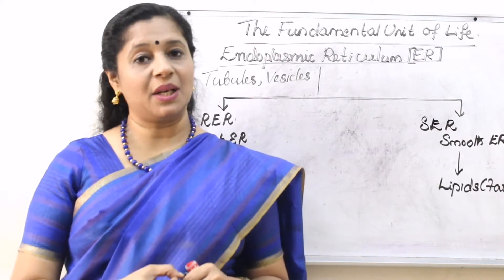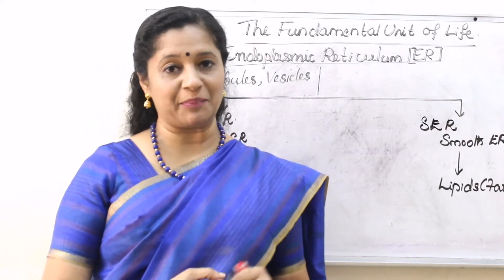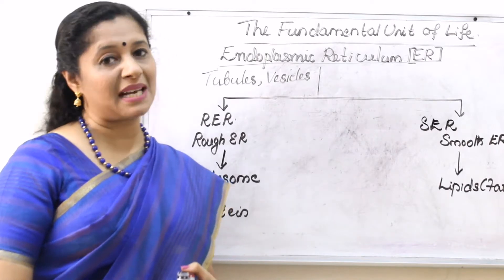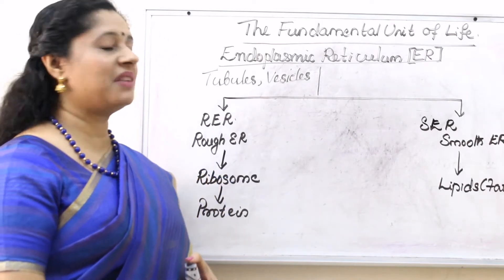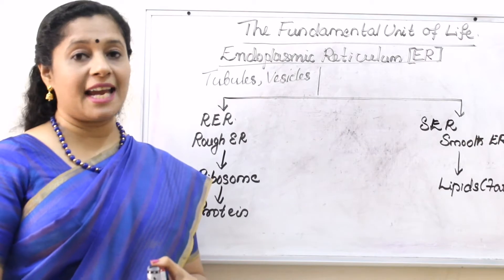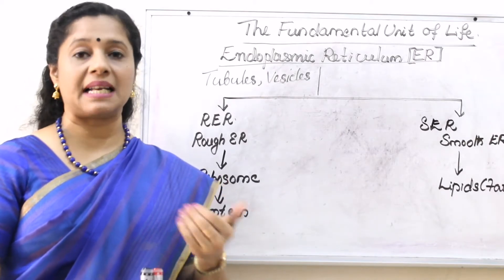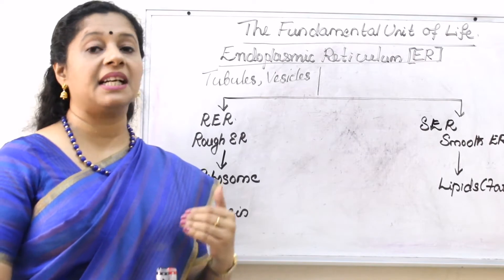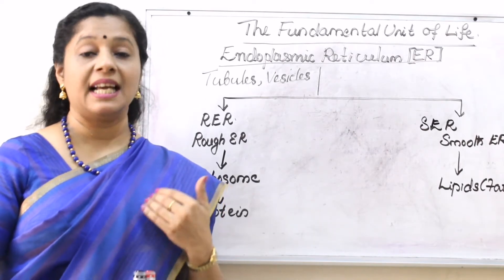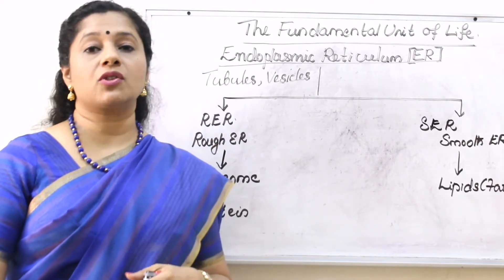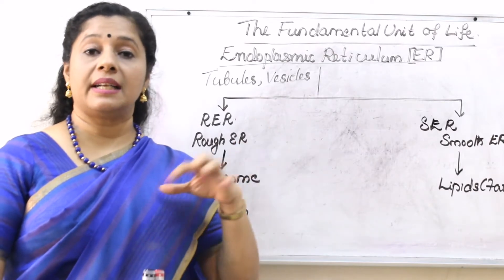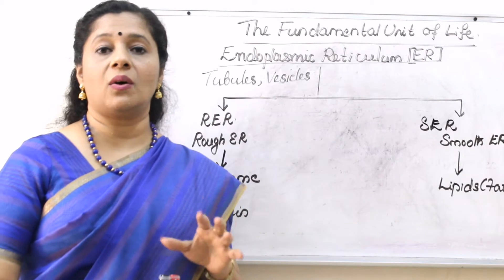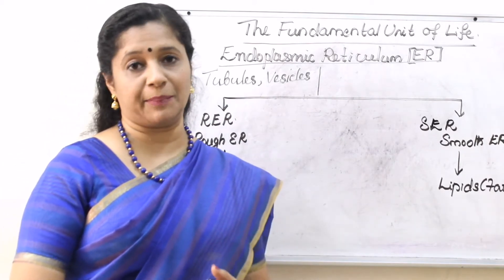Let us begin with endoplasmic reticulum. Let us analyze this term. Endoplasmic reticulum, or short form, we call it ER. Endo means inside. Plasmic means cytoplasm. Inside the cytoplasm, a reticulum. Reticulum means network. So under the microscope, you will find reticulate-like structures or network-like structures within the cytoplasm. They are called endoplasmic reticulum.